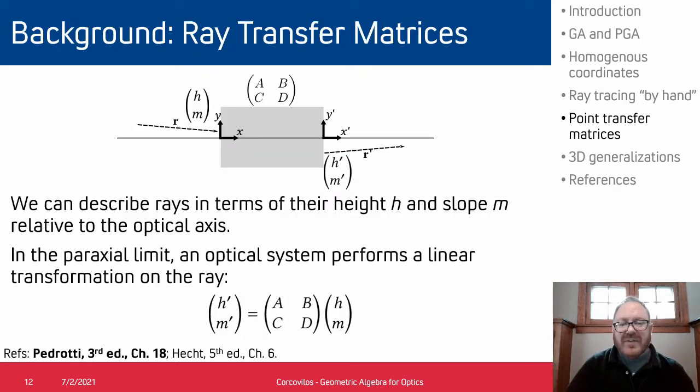For more complicated optical systems we can represent the ray transfer matrices using geometric algebra as well. So here's our kind of standard thing—this can be found in typical optics textbooks like Pedrotti or Hecht. I should note I'm using the convention in Pedrotti which is slightly different than that in Hecht. And so again this relates the incoming rays and outgoing rays by a matrix multiplication.